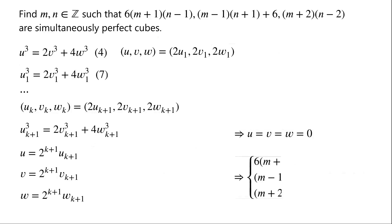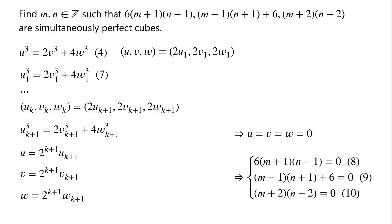Then we have a system of equations: 6 times (m plus 1) times (n minus 1) equals 0, labeled equation 8; (m minus 1) times (n plus 1) plus 6 equals 0, labeled equation 9; and (m plus 2) times (n minus 2) equals 0, labeled equation 10.